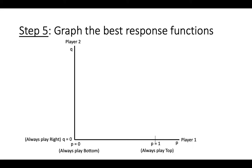For player 2, choosing a q of 0 corresponds to always playing right, and choosing a q of 1 corresponds to the pure strategy of always playing left. Any value of p or q between 0 and 1 corresponds to each player playing a mixed strategy, in which they play each pure strategy with some positive probability. For player 1, any value of q less than 2 fifths means player 1 should play the pure strategy of bottom.